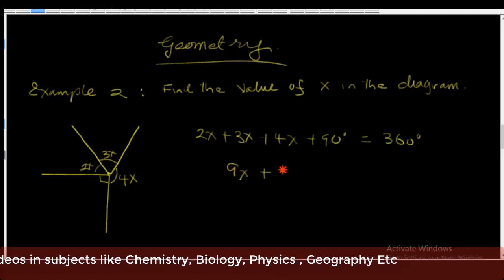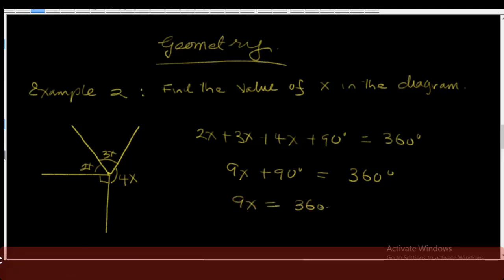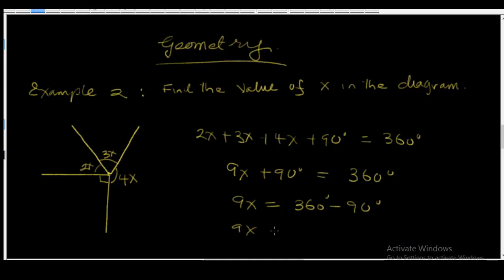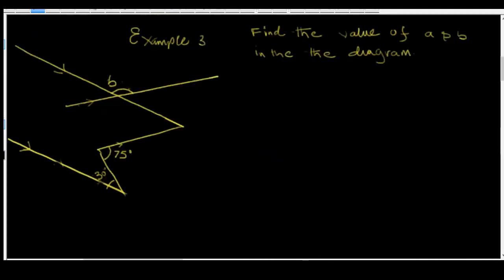Combining like terms: 2x plus 3x plus 4x equals 9x. So 9x plus 90 equals 360 degrees. Therefore 9x equals 360 minus 90, which is 270 degrees. Dividing both sides by 9 gives x equal to 30 degrees.